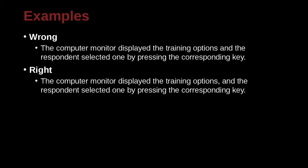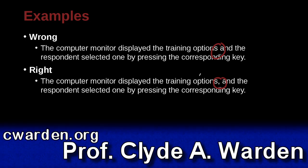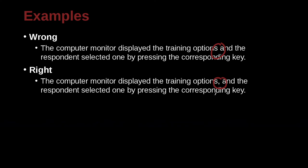'The computer monitor displayed the training options and the respondent selected one by pressing the corresponding key.' One version has a comma before 'and' and the other does not. The correct version has the comma, because 'The computer monitor displayed the training options' can be a sentence on its own, and 'The respondent selected one by pressing the corresponding key' can also be an independent sentence. Since both can be independent, we use the conjunction with a comma.